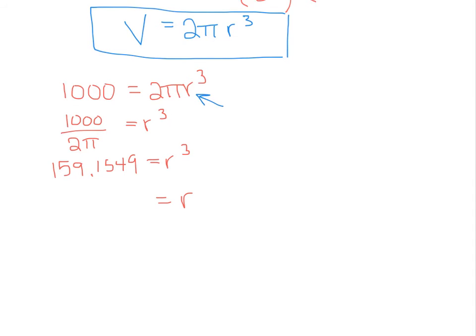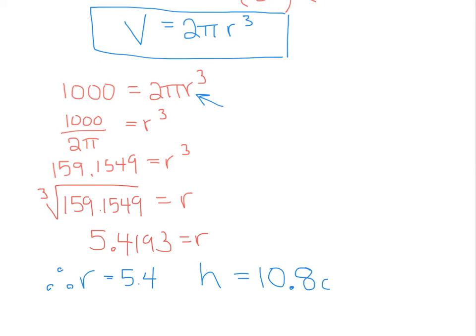Now, in order to get r by itself, we're going to have to do opposite operations. When we have a cubed, we're actually going to take what's called the cube root, and you're going to need to find that button on your calculator. It looks like this with a little 3 in it. You're going to take the cube root of 159.1549, keeping as many decimal places to be as accurate as possible. And you should get a number like 5.4193 for your radius. So your radius is 5.4 cm. Therefore, our radius is 5.4. That would mean that our height is 2 times the radius, equal to the diameter. So we have a height of 10.8 cm.